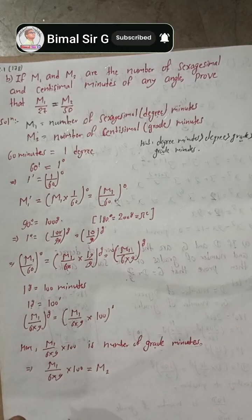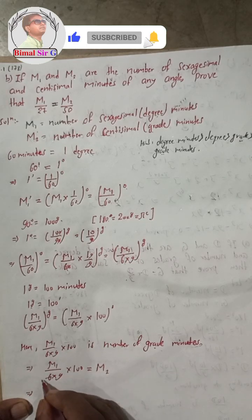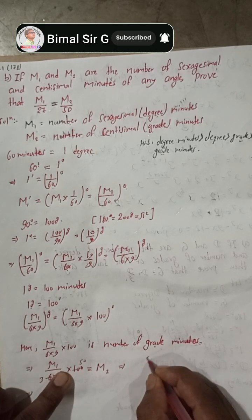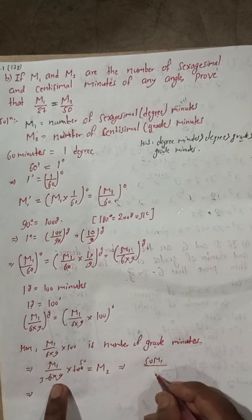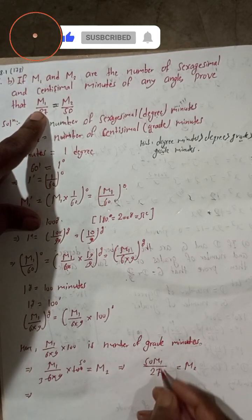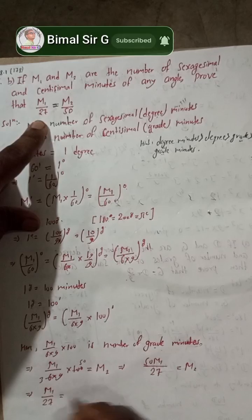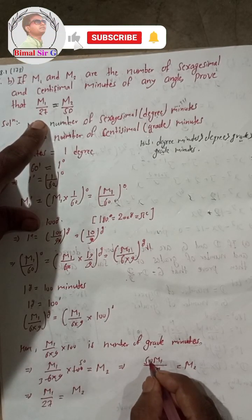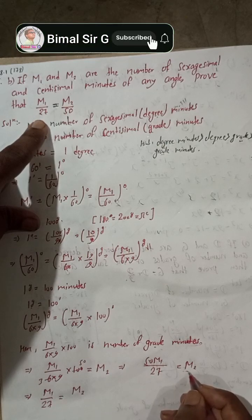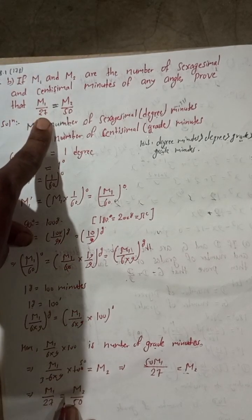Now simplifying: cancel 2 from both 6 and 100 — half of 6 is 3, half of 100 is 50. So we get m1 × 50 / (3 × 9) equals m2, which gives m1 × 50 / 27 equals m2. Rearranging, m1/27 equals m2/50. This is exactly what we needed to prove.